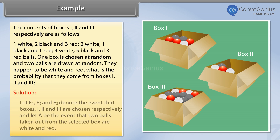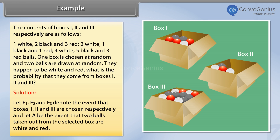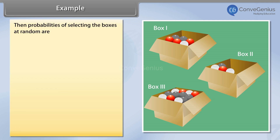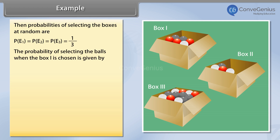Solution. Let E1, E2 and E3 denote the event that boxes 1, 2 and 3 are chosen respectively, and let A be the event that 2 balls taken out from the selected box are white and red. Then the probabilities of selecting the boxes at random are: P(E1) = P(E2) = P(E3) = 1/3. The probability of selecting the balls when box 1 is chosen is given by: